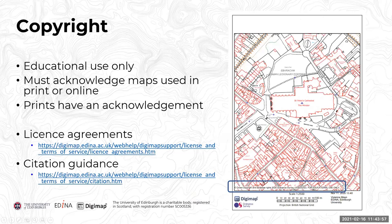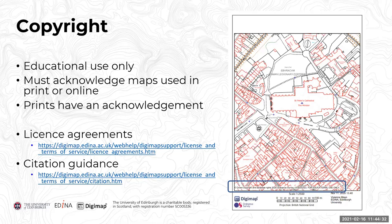On copyright: the maps and data within Digimap are for educational use only. You must acknowledge the maps you've used in print or online. The prints we provide have an acknowledgement on them — each collection will have its own acknowledgement. We do have help available including license agreements and citation guidance for each collection.